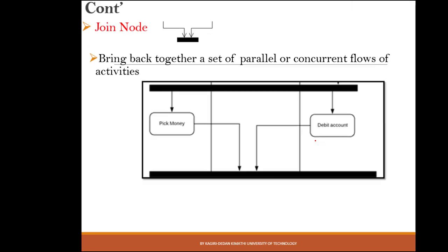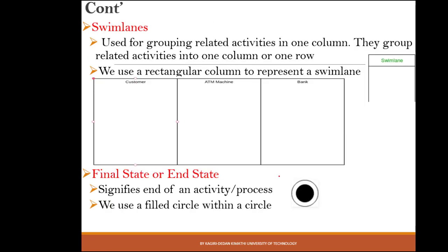The join node is used when you want to bring two or more concurrent or parallel activities back together. For instance, once the customer has picked the money and the customer's account has been debited, a join node is used to bring those two activities together before the receipt is generated.